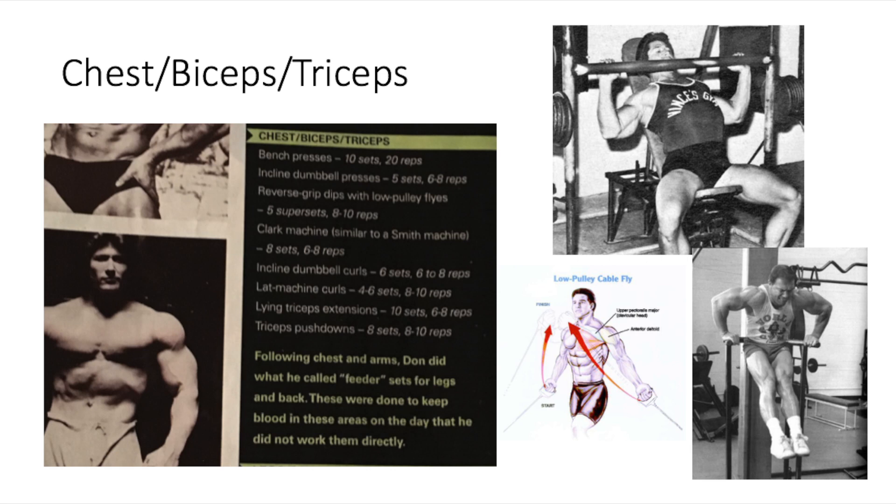Then moves on to the reverse grip dips, supersets it with low pulley flies, does about five supersets of eight to ten reps. Right now you're probably wondering what are reverse grip dips. If you take a look at the bottom right picture, that is Larry Scott performing a common movement in Vince Gironda's gym, reverse grip dips, Vince Gironda movement. And the low pulley flies is the picture left of Larry Scott, right there.